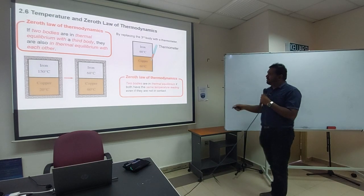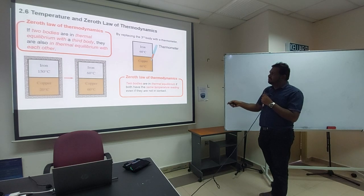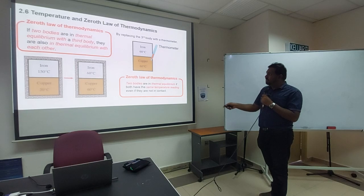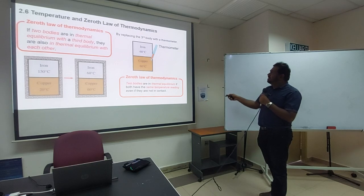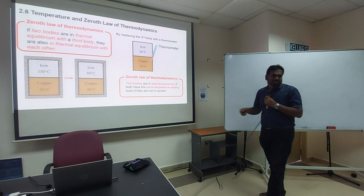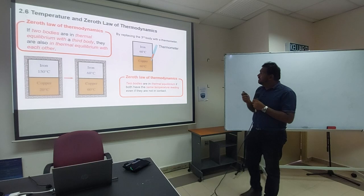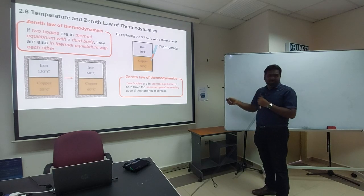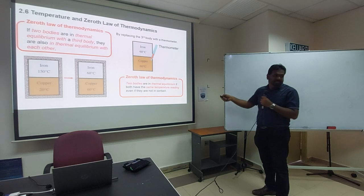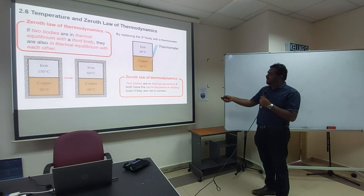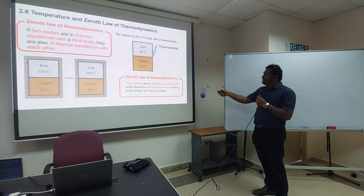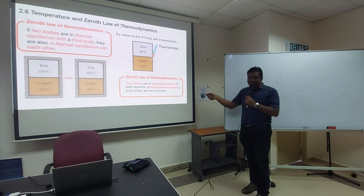Looking at the definition again: if two bodies are in thermal equilibrium with a third body, it's not only two bodies involved. If you connect another body, it will also achieve thermal equilibrium. We replace the third body with a thermometer — just like how we take our body temperature. We put the thermometer on a body that has already achieved equilibrium and get the reading. If the body is at 60 degrees Celsius, the thermometer will also read 60, obeying the Zeroth Law.